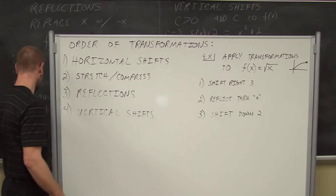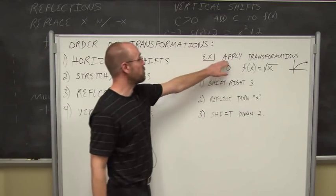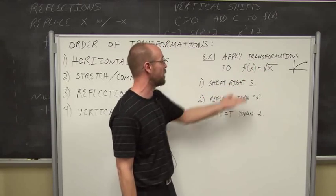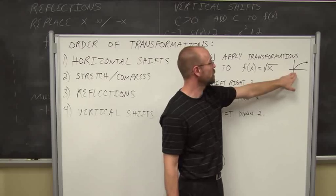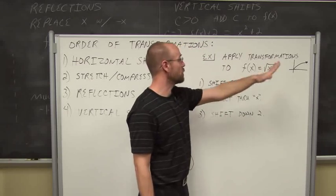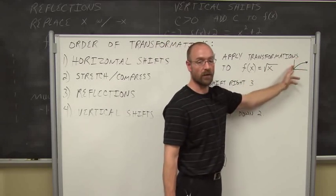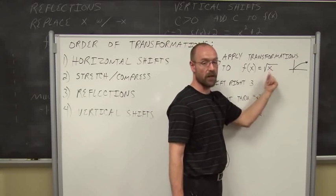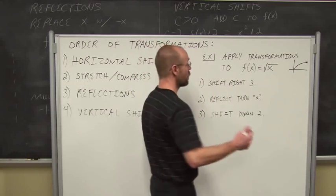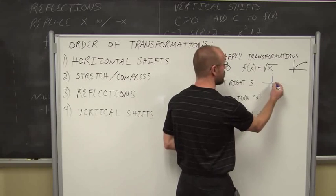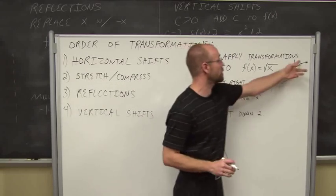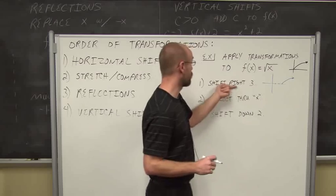Let's look at an example: apply transformations to f of x equals the square root of x. Now we're dealing with a different library function — our square root function, which looks like this starting from the origin, increasing from 0 to infinity. Negative values aren't within its domain. The first thing we're going to do is shift it to the right 3. So I'm going to do a little sketch — shift it to the right 1, 2, 3. That makes my graph go that way — same exact graph, just shifted to the right 3.